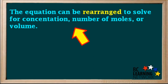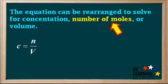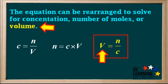The equation can be rearranged to solve for concentration, number of moles, or volume. When solving for concentration, the equation is C equals n over V. To solve for number of moles, n, just cross multiply the C and the V, and we get n equals C times V. In order to solve for V, divide both sides of the equation by C, which gives us V equals n over C.